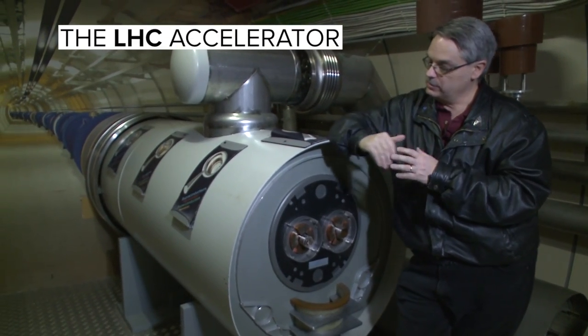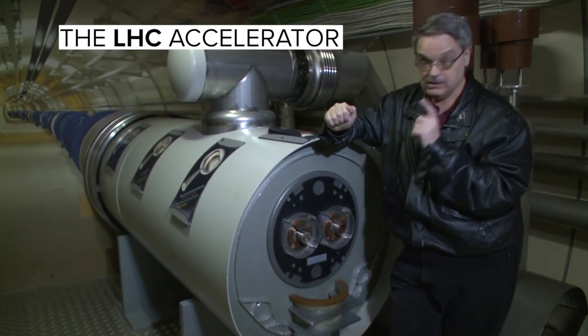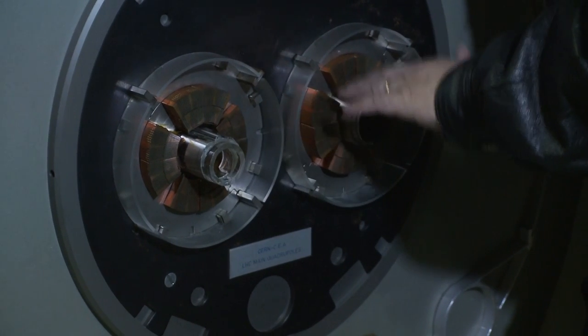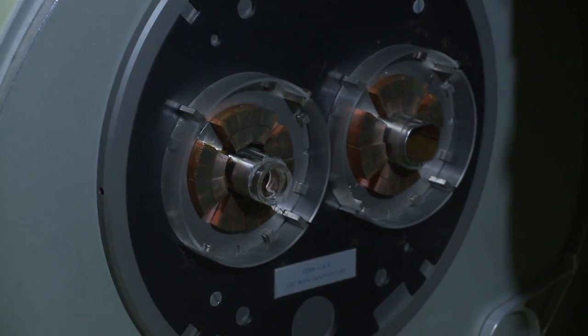This is a mock-up of what the magnets are. They're very large. You can see that the accelerator actually consists of two accelerators inside each magnet. One of these is for each beam, and the two beams are going in opposite directions.